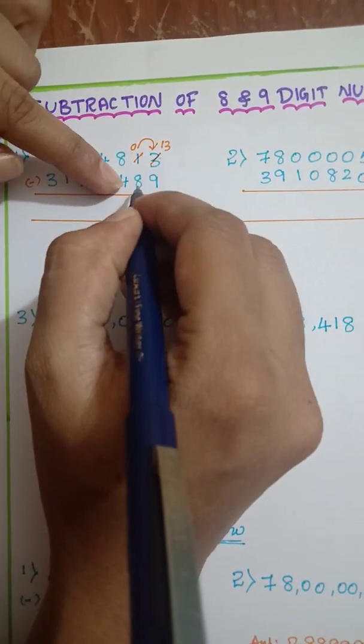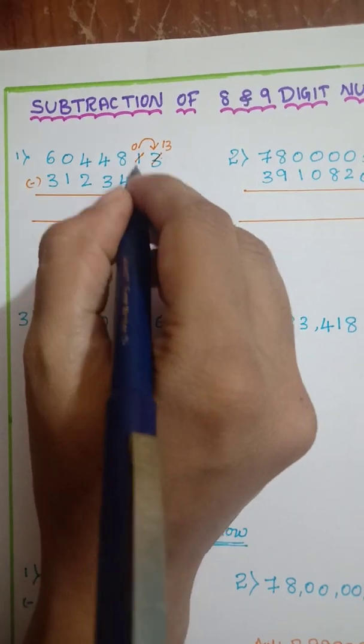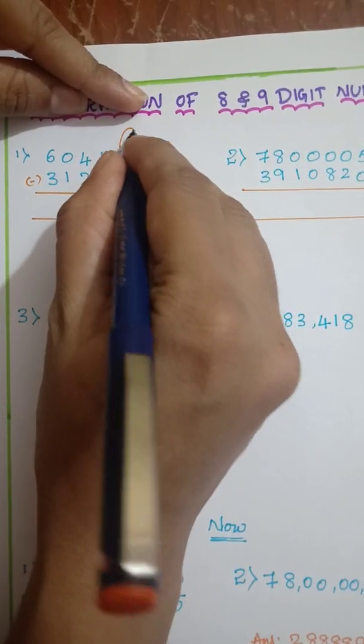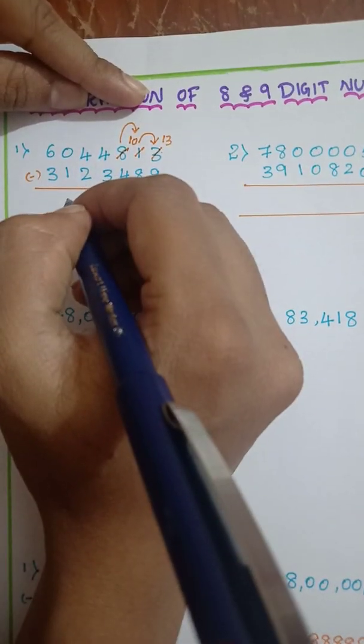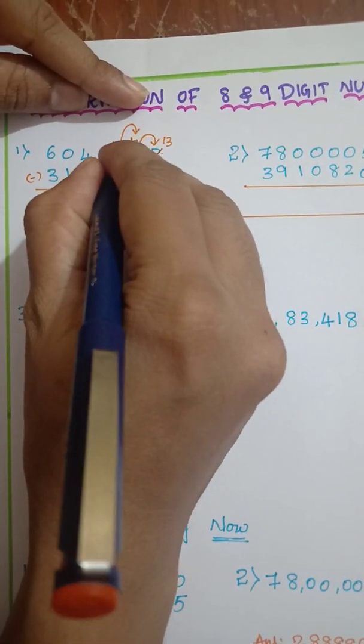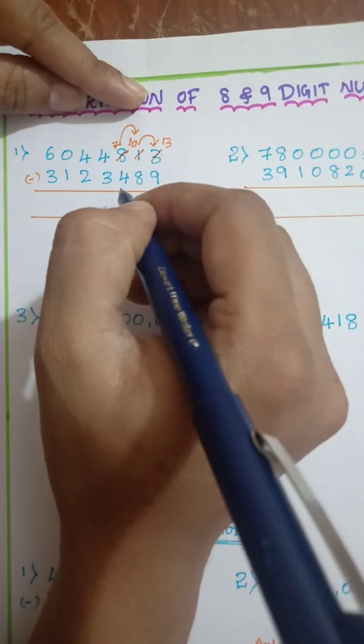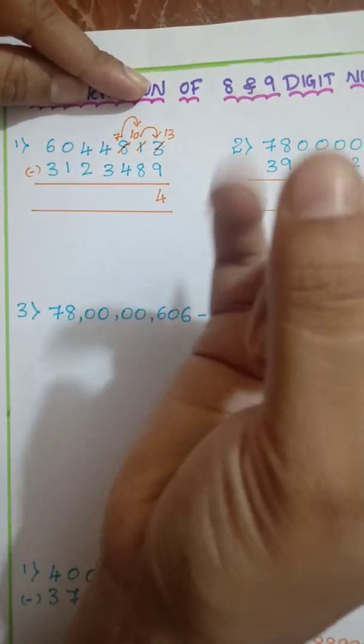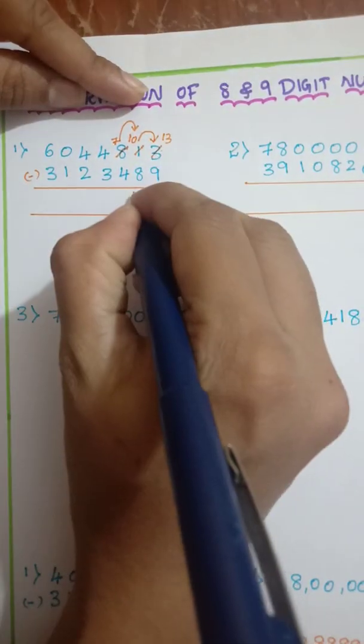From 0, we really can't subtract this 8. So again, what we do here, we will take borrow. So this 0 will become 10. And here 8 will become 7. 10 minus 8 is, see after 8, 9, 10. It's just 2.